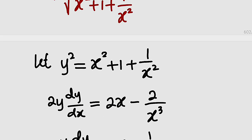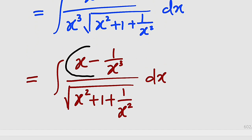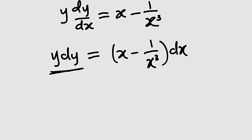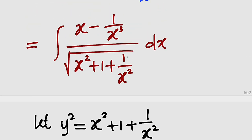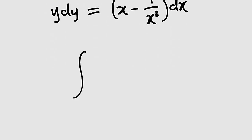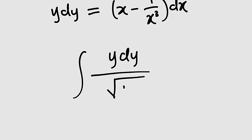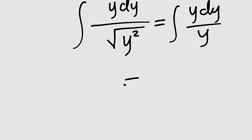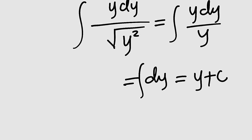If you observe, our numerator right here is x minus 1 divided by x to the 3rd power dx, therefore we can replace it with y dy. And we have already let the whole radical expression equal to y squared. So back-substituting, we are going to have y dy divided by the square root of y squared. The square root of y squared is y, so we have the integral of y dy divided by y. The y cancels, leaving only dy. The integral of dy is y plus the constant of integration.